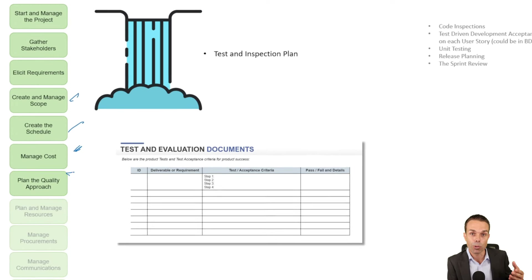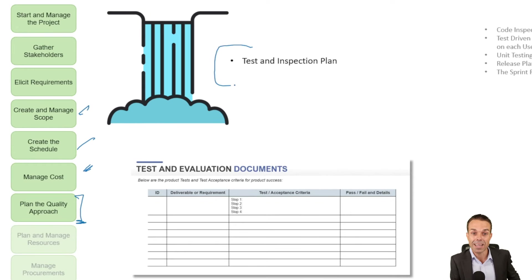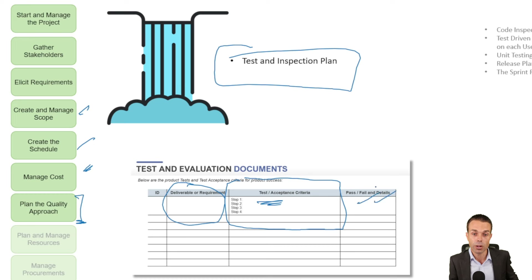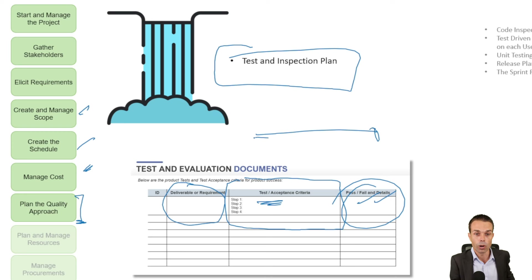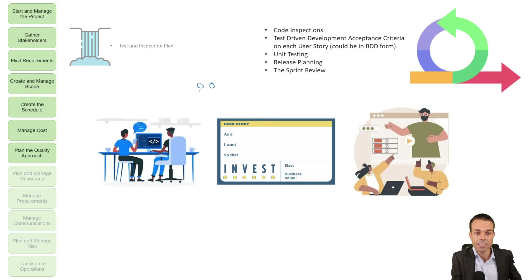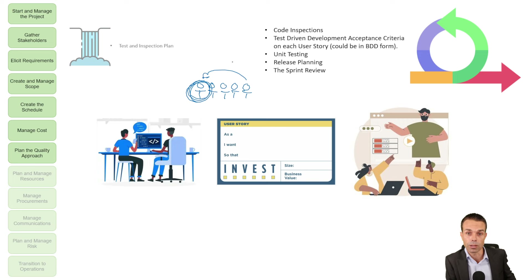Now that we've got scope, schedule, and cost, we can look at quality. In a Waterfall project we use our test and inspection plan — what are the test criteria for our deliverables to make sure they meet the customer's quality requirements? Usually we do those tests right at the end once all scope has been delivered, but sometimes we do all the work and then find something wrong and have to go all the way back to the beginning. From an Agile perspective we do small increments — testing and delivering continuously — so there's no need to go back; it's all encompassed in one little deliverable.